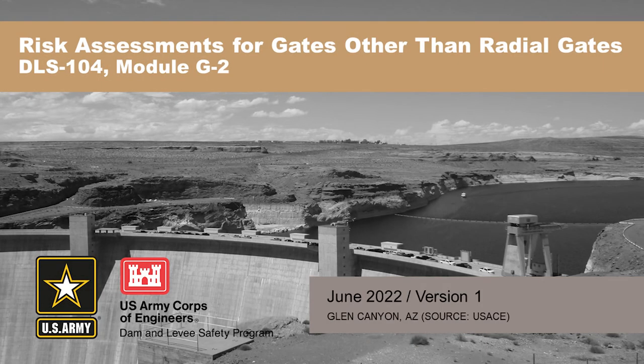I'm going to talk about risk assessments for gates other than radial gates. We're going to cover essentially the next most popular gates that we have. Most of these gates are on riverine structures — our navigation locks and dams and the spillways associated with those. Pretty much nowadays what we're building are miter gates and tainter gates or radial gates. Most of these are historic type gates, but we still have them in our inventory, and these gates can be found on other projects depending on the era that the dam was constructed in.